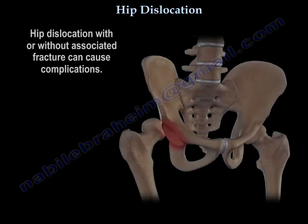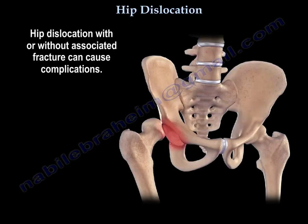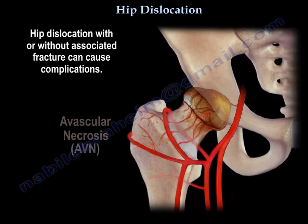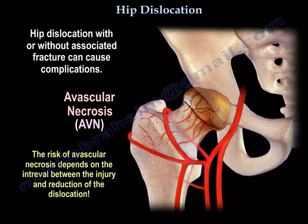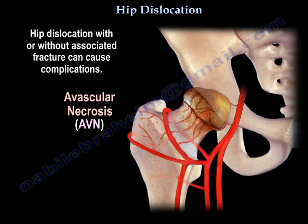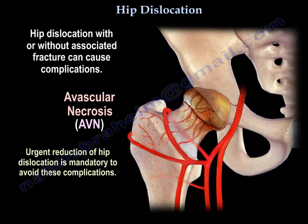Hip dislocation with or without an associated fracture can cause complications such as avascular necrosis. The risk depends on the interval between injury and reduction, so urgent reduction of the hip is mandatory to avoid this complication.